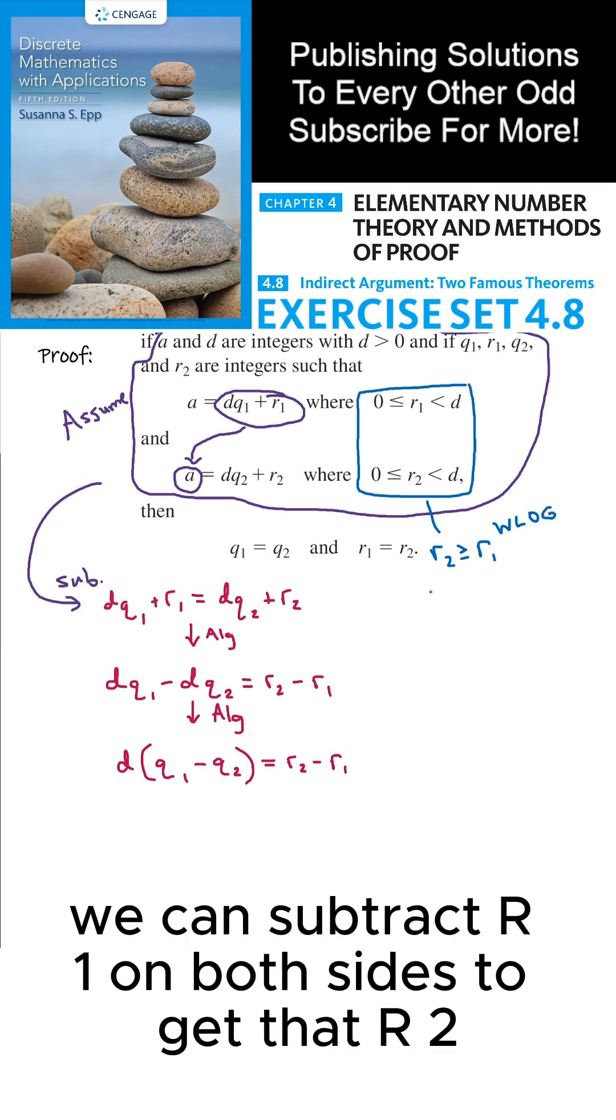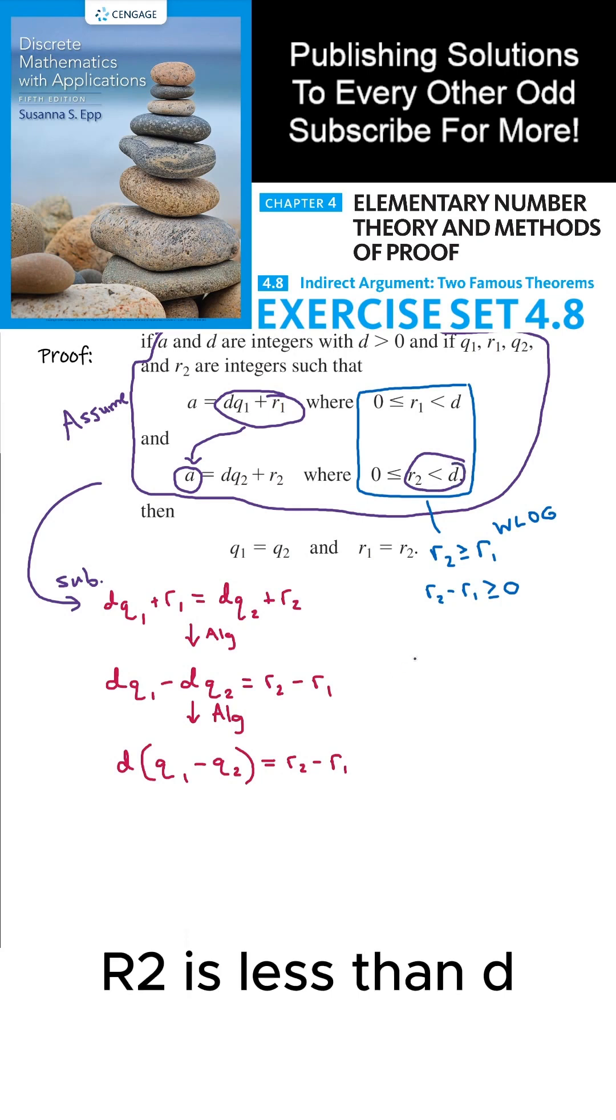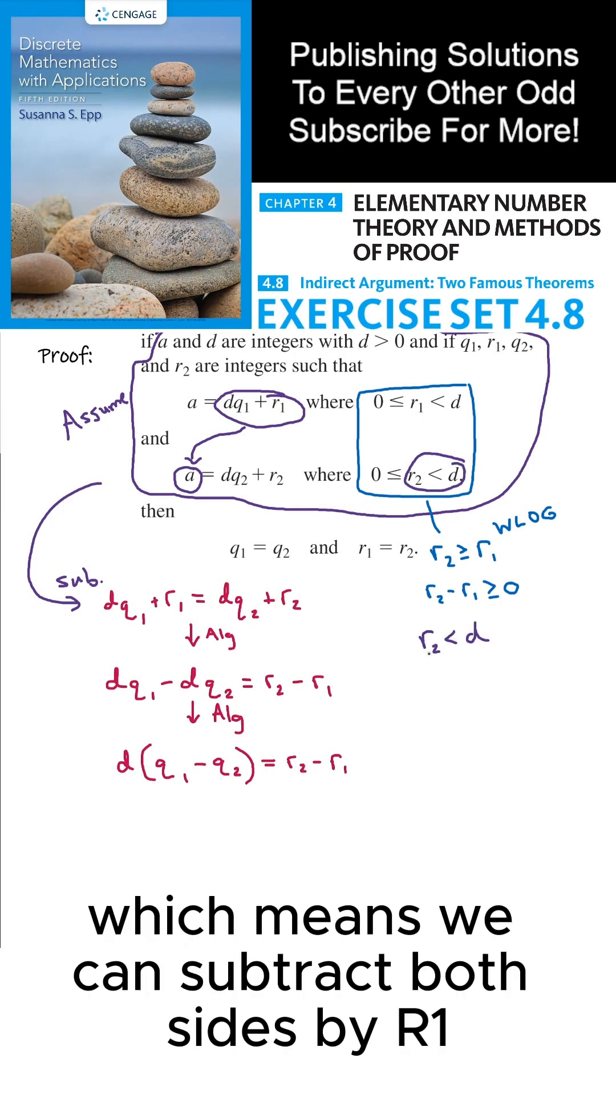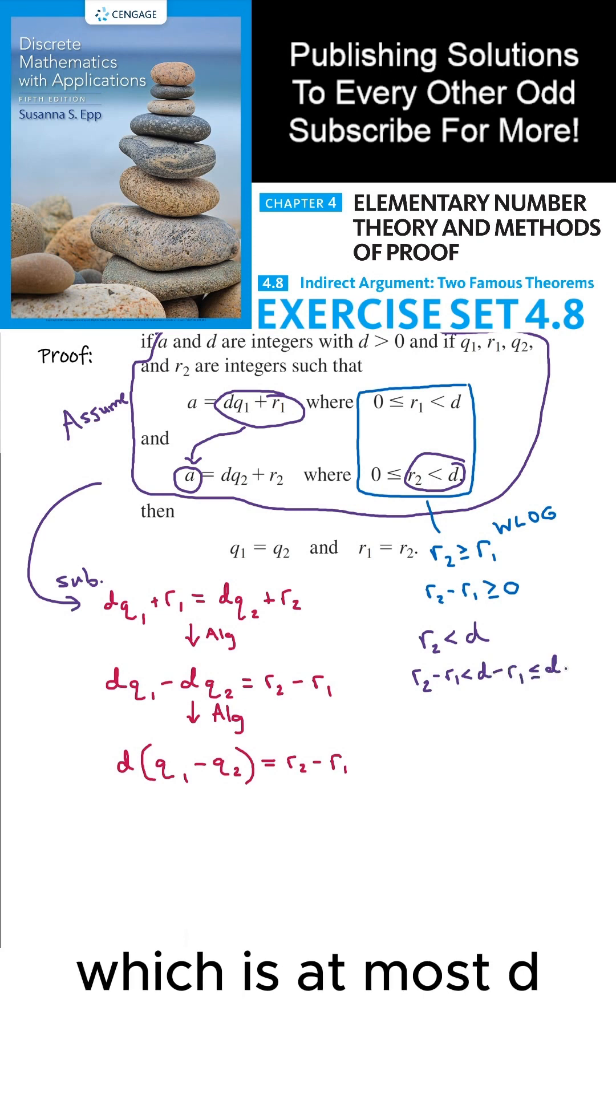From here, we can subtract R1 on both sides to get that R2 minus R1 is greater than or equal to zero, but at the same time R2 is less than D, which means we can subtract both sides by R1 to get that R2 minus R1 is less than D minus R1, which is at most D.